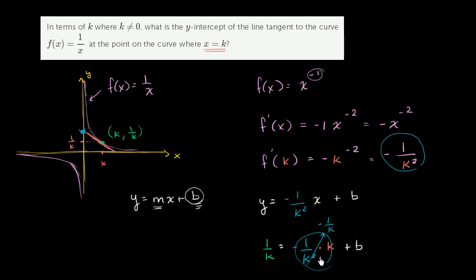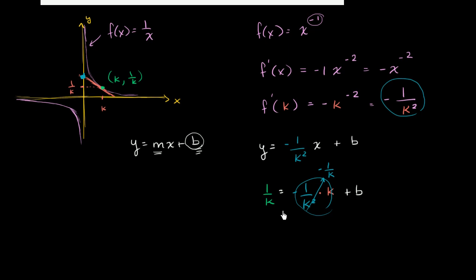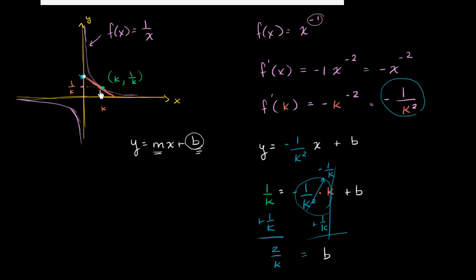So how do we solve for b? We add 1 over k to both sides. On the left-hand side, 1 over k plus 1 over k gives us 2 over k. And on the right-hand side, we're just left with b. So b equals 2 over k. The y-intercept of the line tangent to the curve when x equals k is going to be 2 over k.